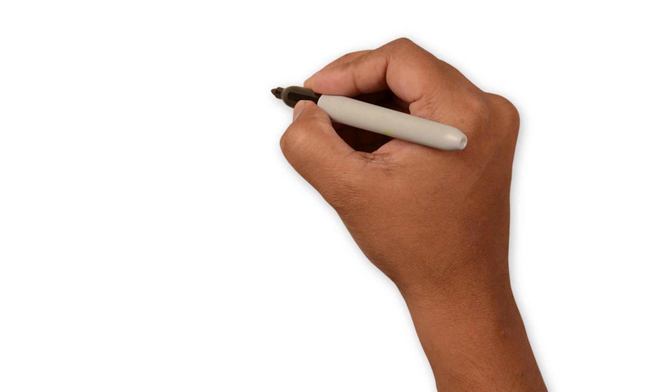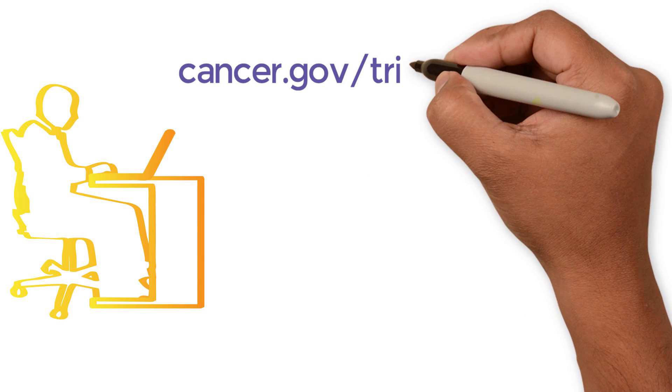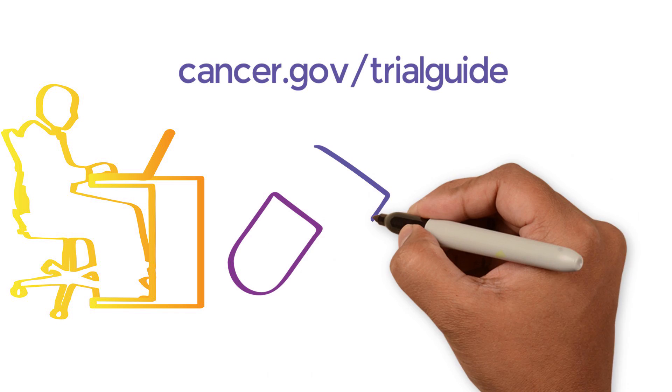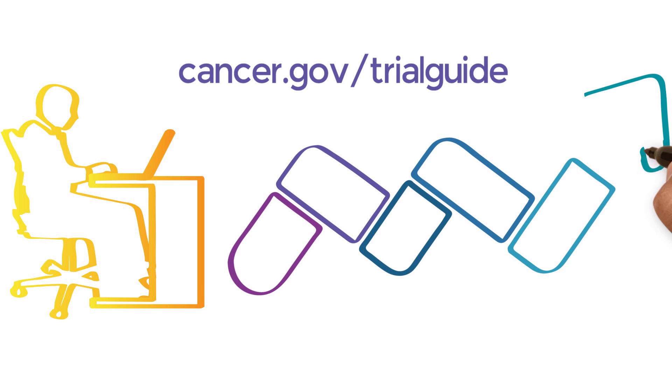The National Cancer Institute, or NCI, is a federal government agency that is part of the National Institutes of Health. At cancer.gov/trialguide, NCI provides a six-step online guide to help you search for open trials and decide whether to join one.